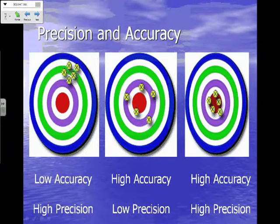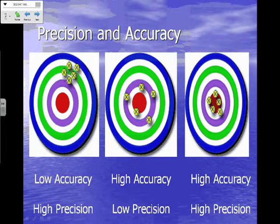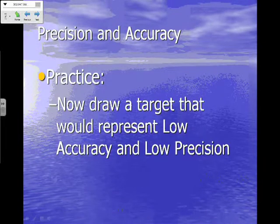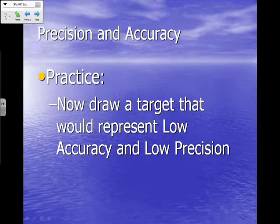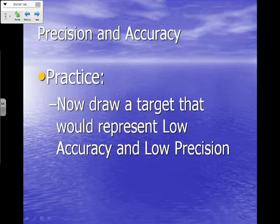The middle dart board represents high accuracy and low precision. Most of the darts are really close to the bullseye, but none of the darts are really close to one another — so that gives us high accuracy but low precision. The last dart board on the right represents high accuracy and high precision, because they're all very close to the bullseye and all very close to one another. Go ahead and draw a target that would represent low accuracy and low precision — we'll check those in class tomorrow.